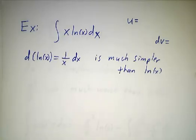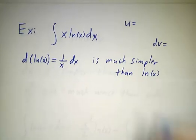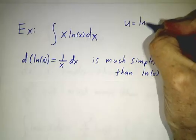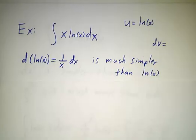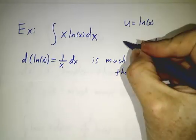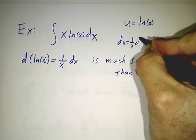If you take the derivative of natural log of x, you get something that's way simpler than the natural log of x. So that suggests that we should let u be the natural log of x. And that means that du is 1 over x dx.